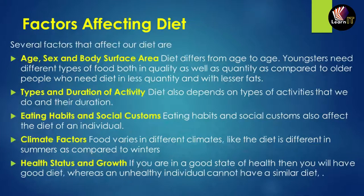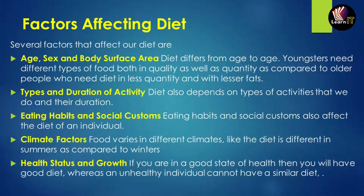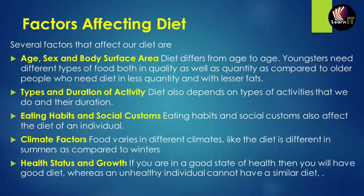Now let us move to the factors affecting diet. The first factor is age, sex, and body surface area. From one age group to another, younger people need different types of food in both quality and quantity. Older individuals need less quantity and less fat due to body composition differences. Diet also differs between males and females — males generally consume more food than females.